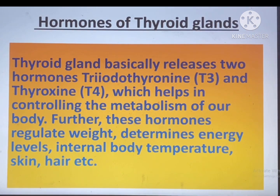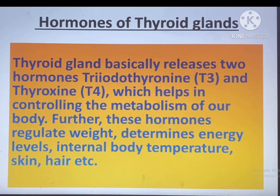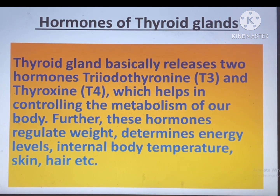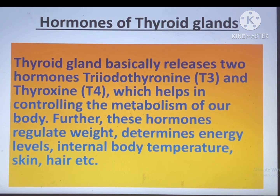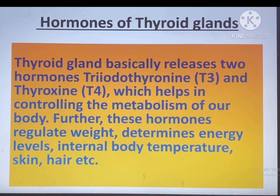What are the principal functions of thyroid glands? The thyroid gland secretes different hormones such as thyroxine and triiodothyronine or T3, which help in controlling the metabolism of our body. Further, these hormones regulate weight, determine energy levels, internal body temperature, skin, hair, etc.